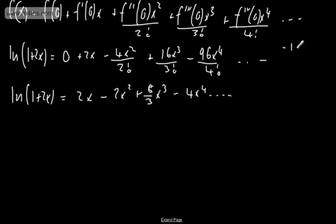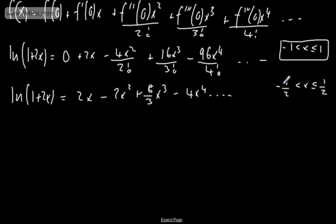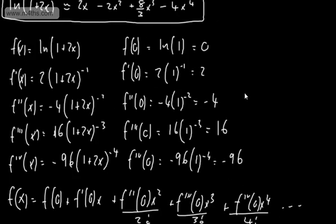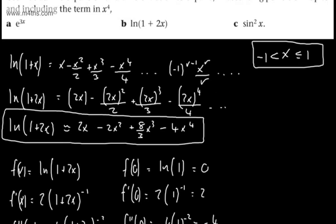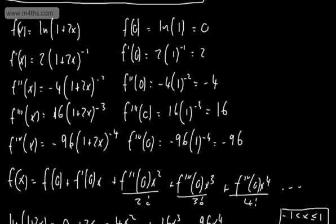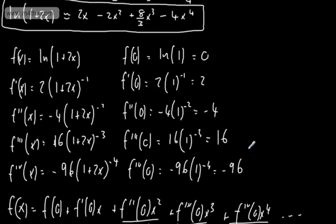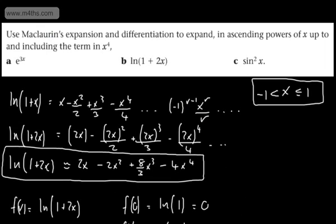We knew the original ln(1+x) was valid from −1 to +1, inclusive of +1. What we now have is valid from −1/2 to +1/2, inclusive of +1/2. Since we've taken x to be 2x, we feed it in and simply divide through our inequality by 2. So that's the expansion for ln(1+2x), valid from −1/2 to 1/2.